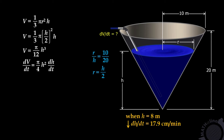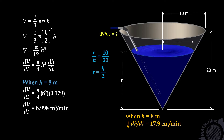So we have dV/dt equals pi over 4 times 8 squared. dh/dt is 17.9 cm per minute, which equals 0.179 meter per minute. Therefore, dV/dt equals 8.998 cubic meters per minute. To convert into liters per second, multiply by 1,000 to convert cubic meters to liters (since 1,000 liters equals 1 cubic meter), then multiply by 1 minute over 60 seconds. The answer is 150 liters per second.